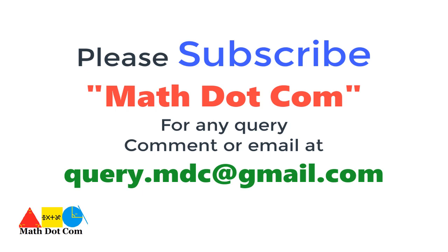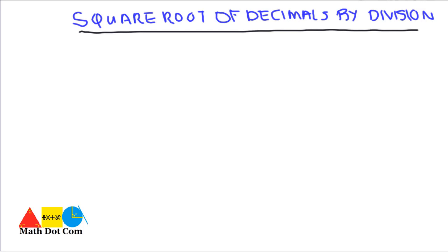Please subscribe for any query, comment or email. In today's lecture we will see how you can find the square root of decimals by division method, if you are not allowed to use factorization or any calculator. Factorization is for small numbers, but by division you can get large numbers.